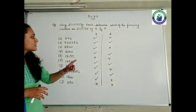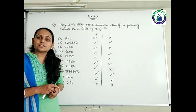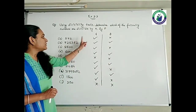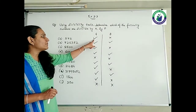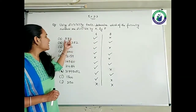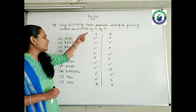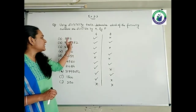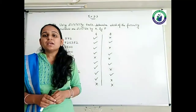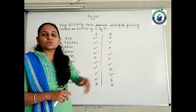Based on the rule only, let's see one by one. Last two digits 72 is divisible by 4, yes. For 8, last three digits should be checked — 572, it is not divisible by 8. So I have put a cross over there.